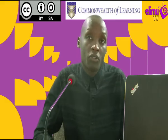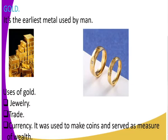Now let us get to gold as a metal. Gold is one of the precious metals we have. As we said in trade, it was mostly used as a form of currency. It is very precious and expensive, and it is also a measure of wealth. It is the earliest metal used by man. You can see in the first image how glittering and precious gold is.